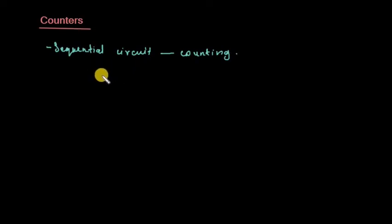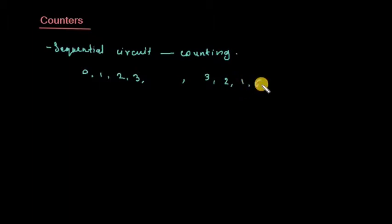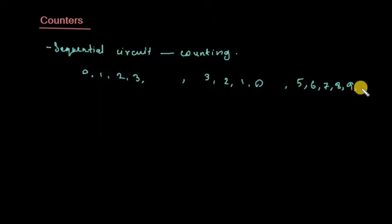We are going to do counter design. For example, an up counter counts 0, 1, 2, 3, or a down counter goes 2, 1, 0, or we can count 5, 6, 7, 8, 9 — this depends on the design.